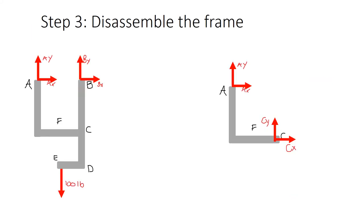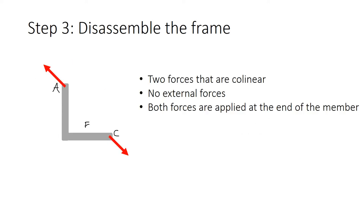I'm going to isolate member AC. In the FBD for AC, we still have the reaction force of A in the y and x direction. But in frame problems, all joints are connected by pins, so we also have reaction forces Cy and Cx. We can take these components and notice that member AC only has two forces acting upon it. At each end, the forces are collinear, so member AC is a two-force member.